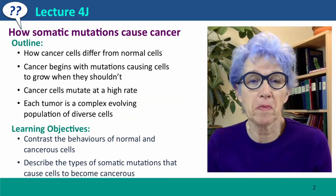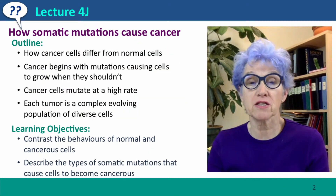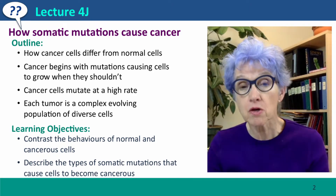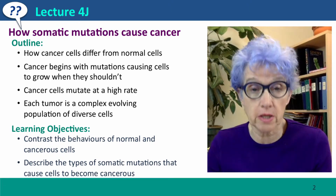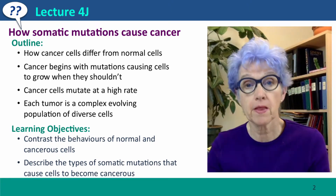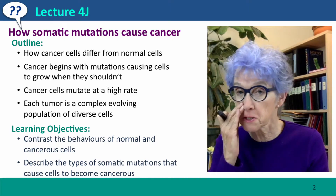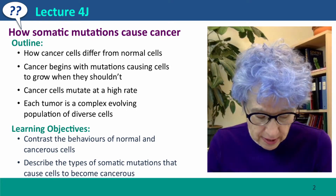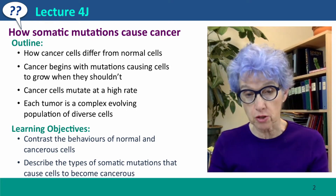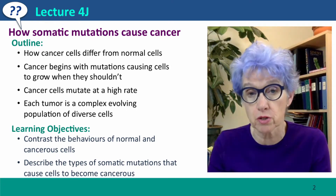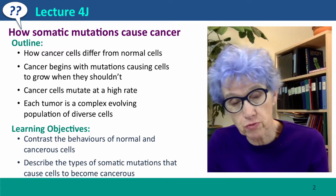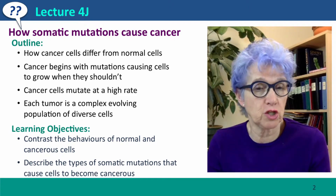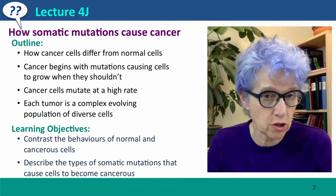Hi, everyone. Welcome back to Lecture 4J of Useful Genetics, where we're going to talk about how somatic mutations cause cancer. We'll talk about how cancer cells differ from normal cells, and how cancer begins with mutations that cause cells to grow when they shouldn't. We'll talk about mutation rates in cancer cells and about the very complex genetic structure of tumors.